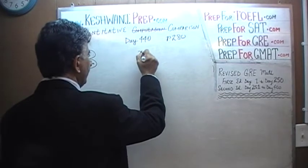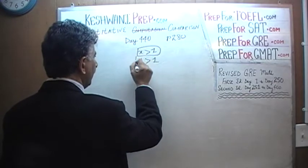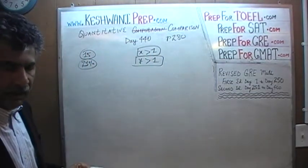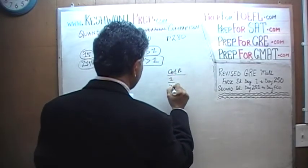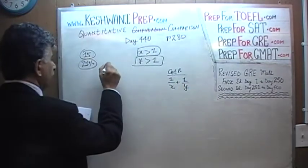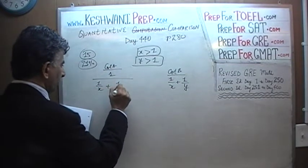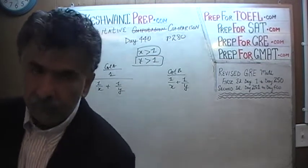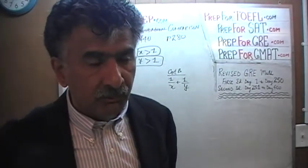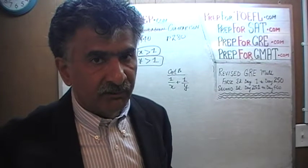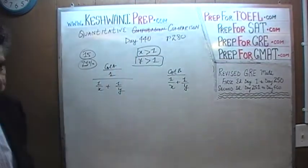We are told that we have two quantities. We have x, which we are told is more than one, and we have y, which we are told is more than one. What we are being asked to compare are these two quantities. In column B, we have one over x plus one over y. And in column A, we have one over the quantity one-over-x plus one-over-y. In other words, column A has the reciprocal of the quantity in column B. I will now get out of your way and give you an unobstructed view of the blackboard - pause the video and solve the problem yourself.